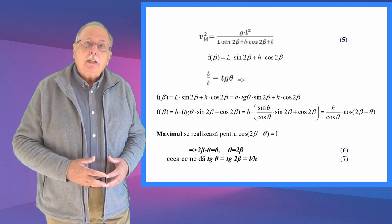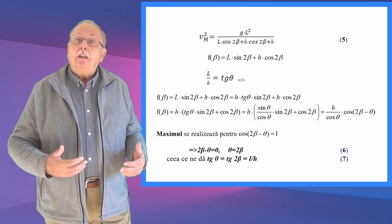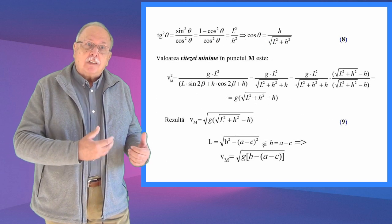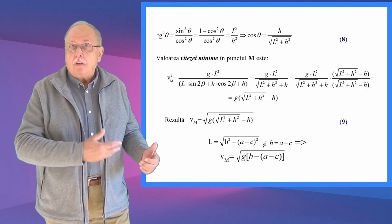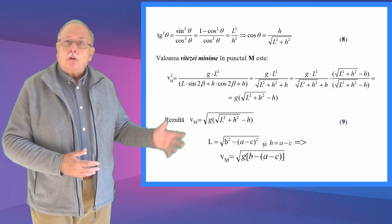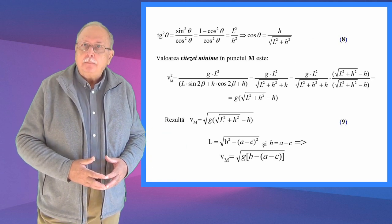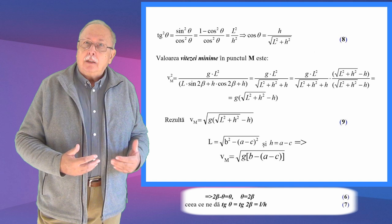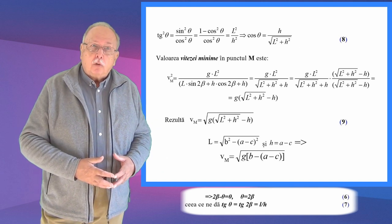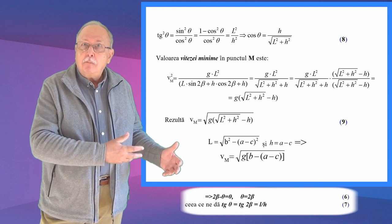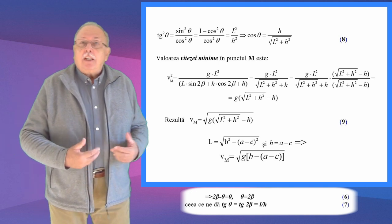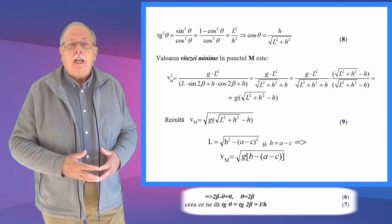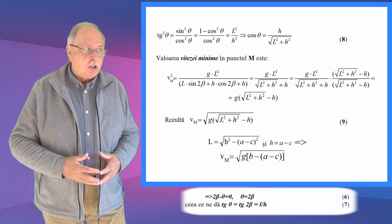De aici rezultă relația 7: tangentă de 2beta egal cu L/H. Folosind din nou trigonometria, ajungem la relația 8: cosinus de theta egal cu H supra radical din (L pătrat plus H pătrat). Folosind relațiile 6, 7 și 8, putem calcula valoarea vitezei minime necesare în punctul M, obținând relația VM egal cu radical din (g·(radical din (L² + H²) minus H)), relația 9.